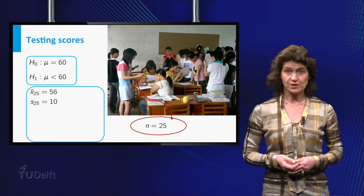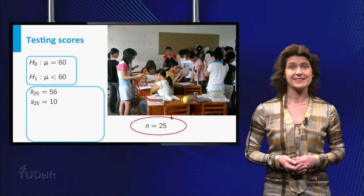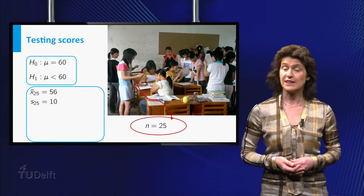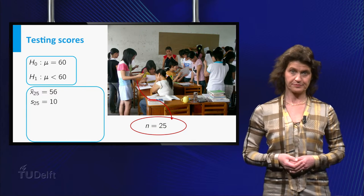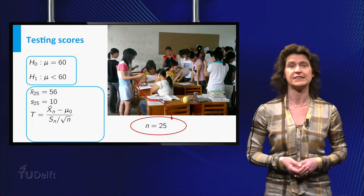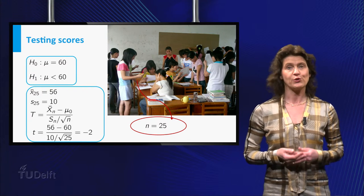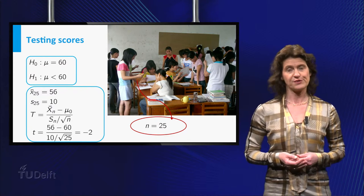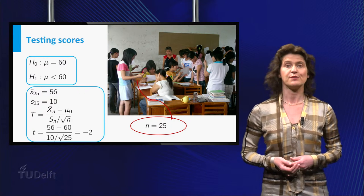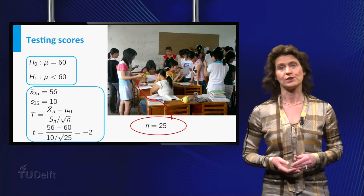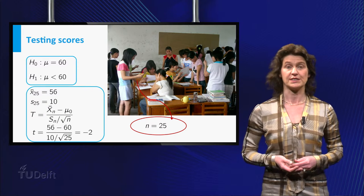The mean score of the 25 students is equal to 56. The sample standard deviation turns out to be 10. So the value of t is small t, which is equal to 56 minus 60, divided by 10, divided by the square root of 25, which is minus 2.